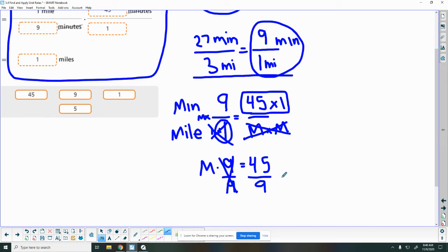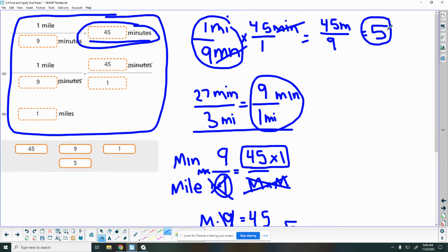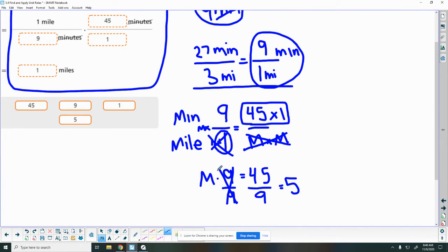45 divided by 9 equals 5. M equals 5. 5 miles. So I know right now that didn't look easier. Let's start it again here.